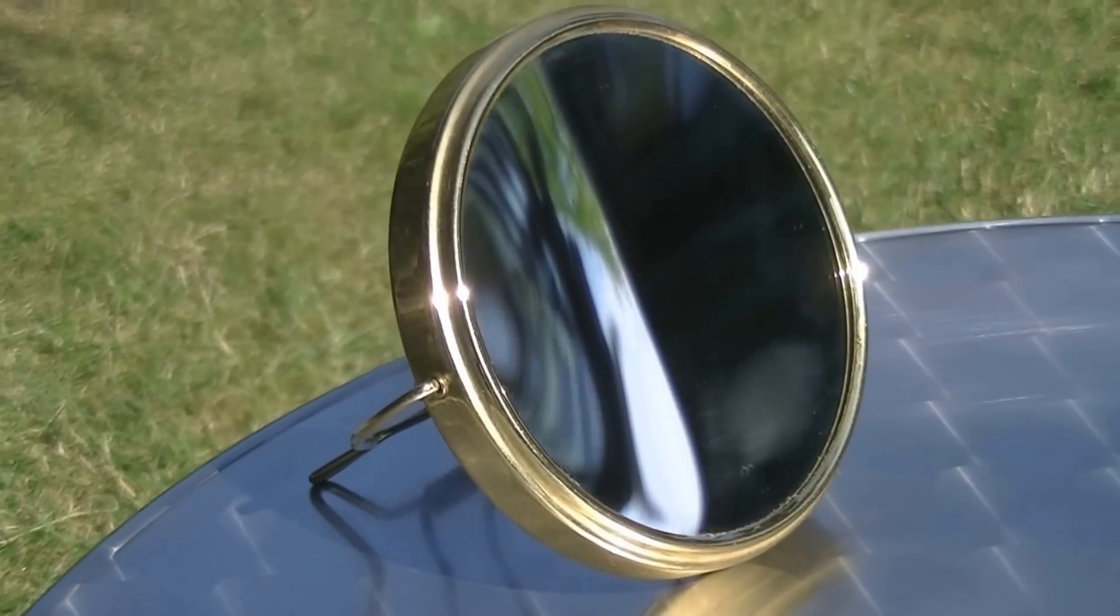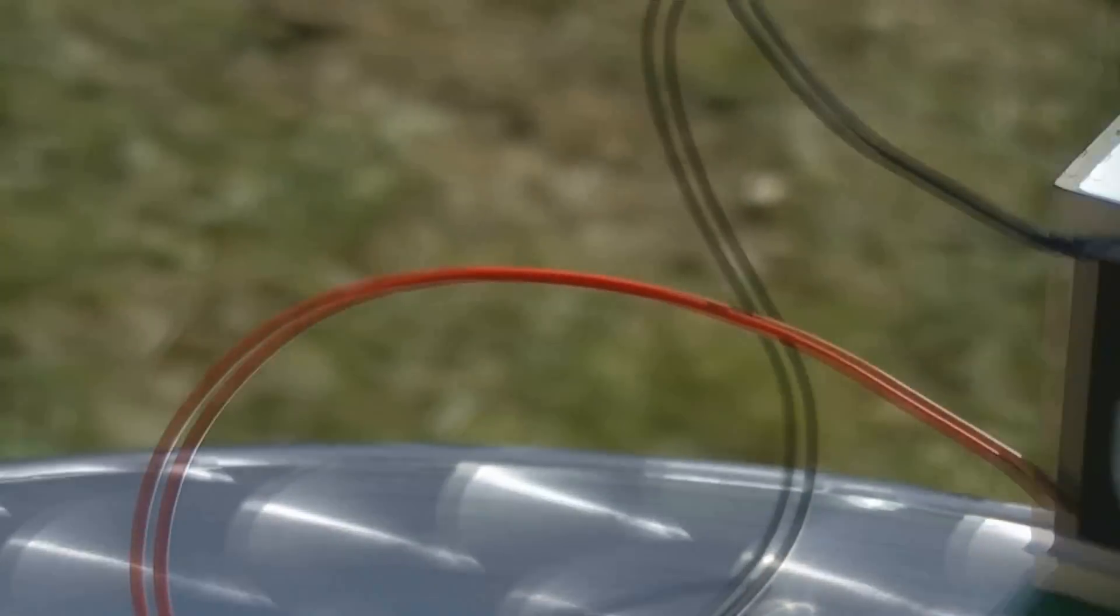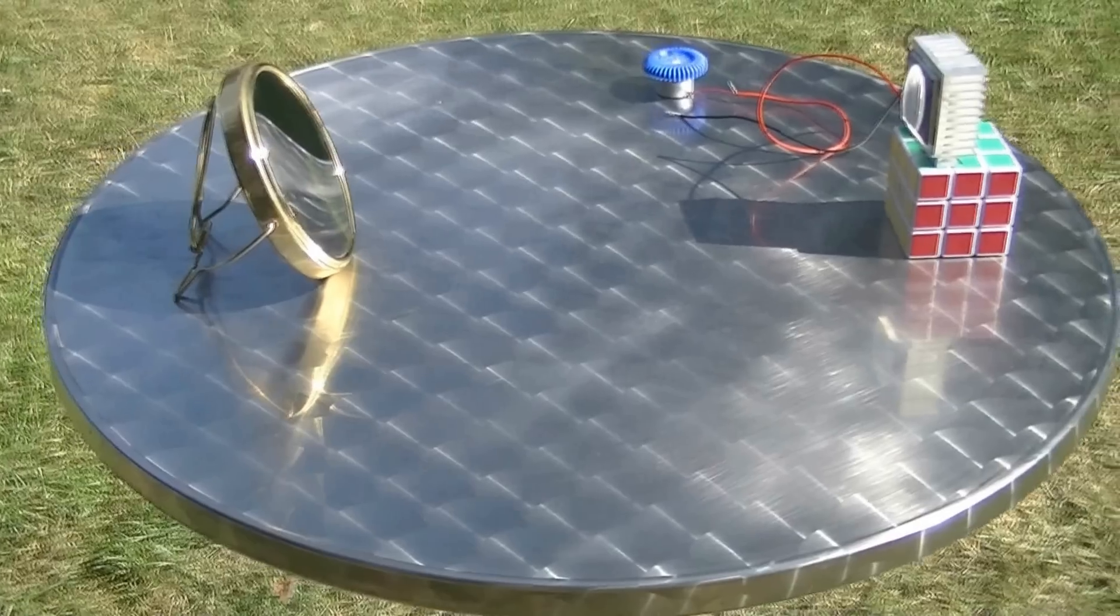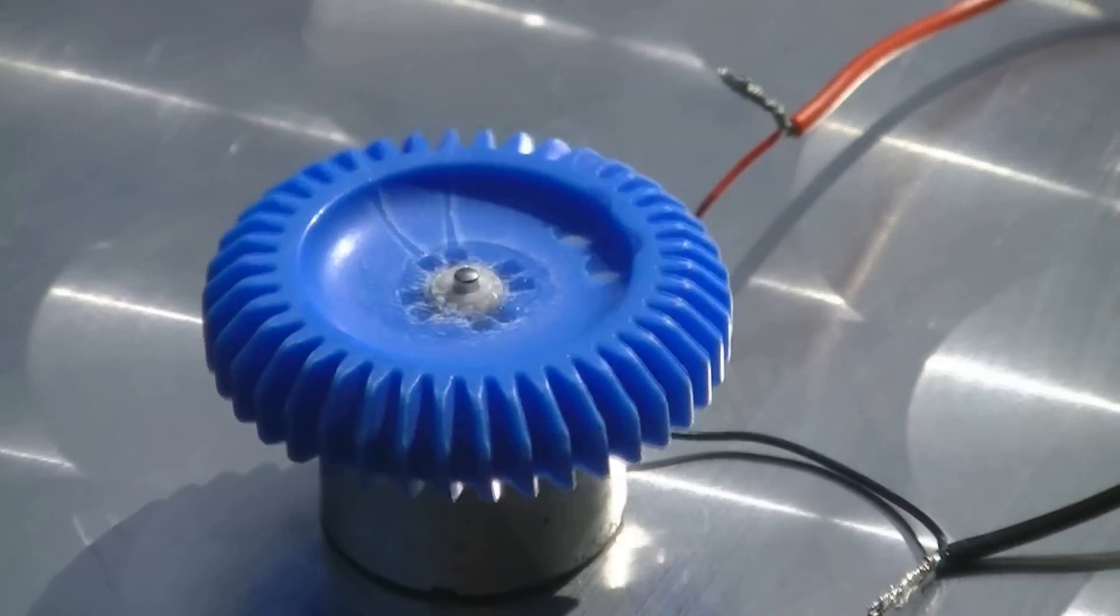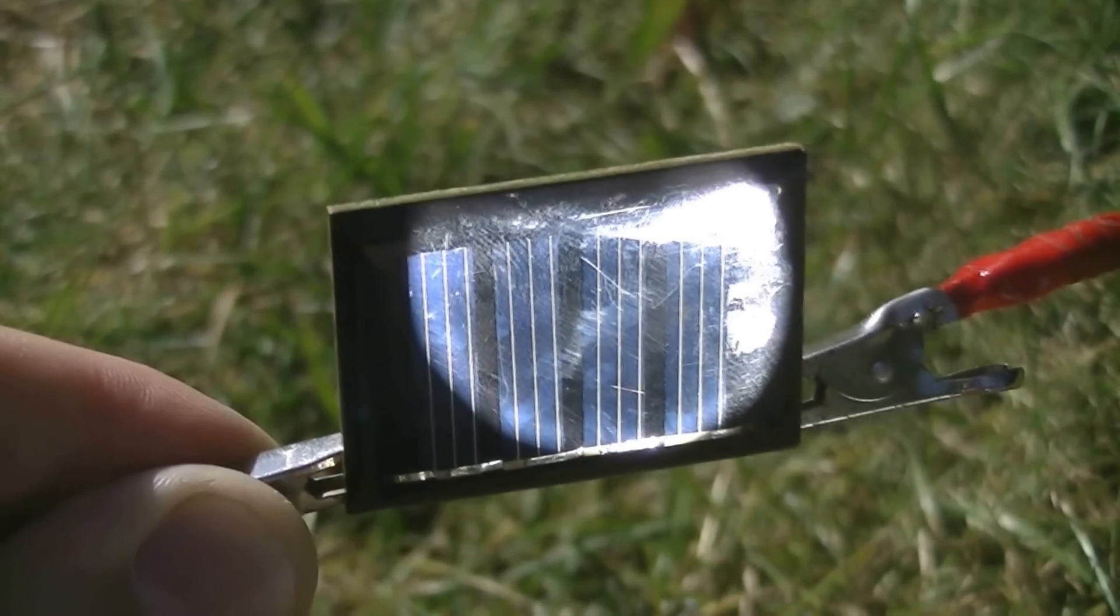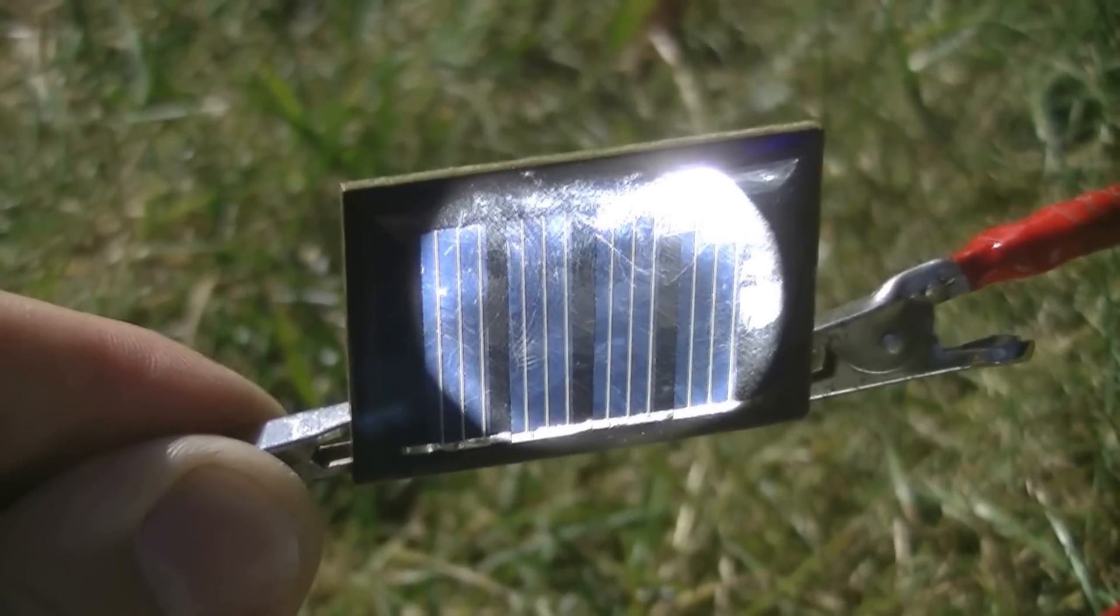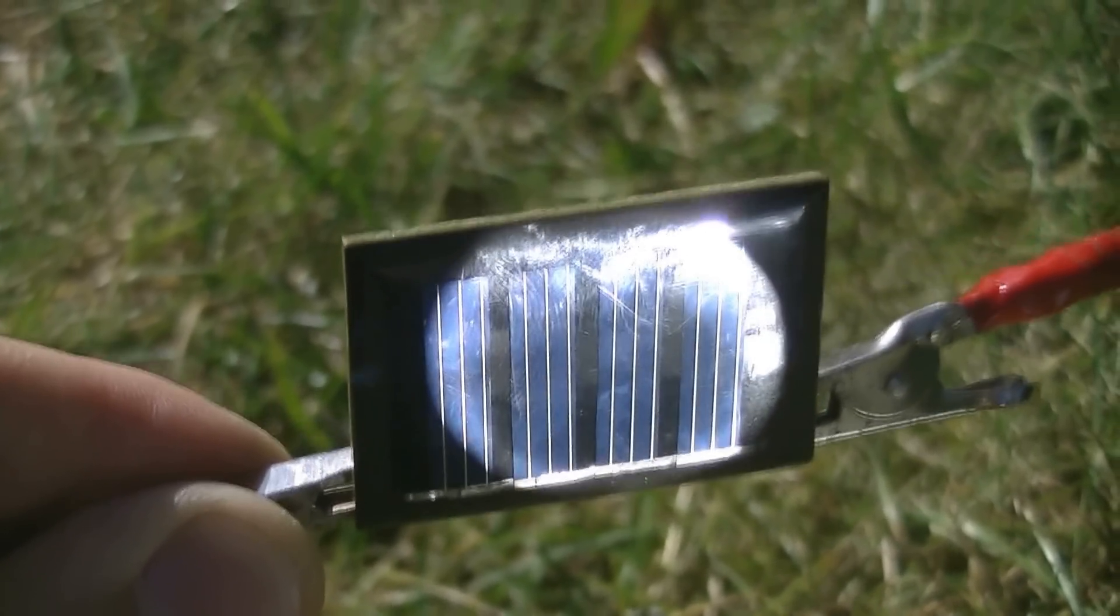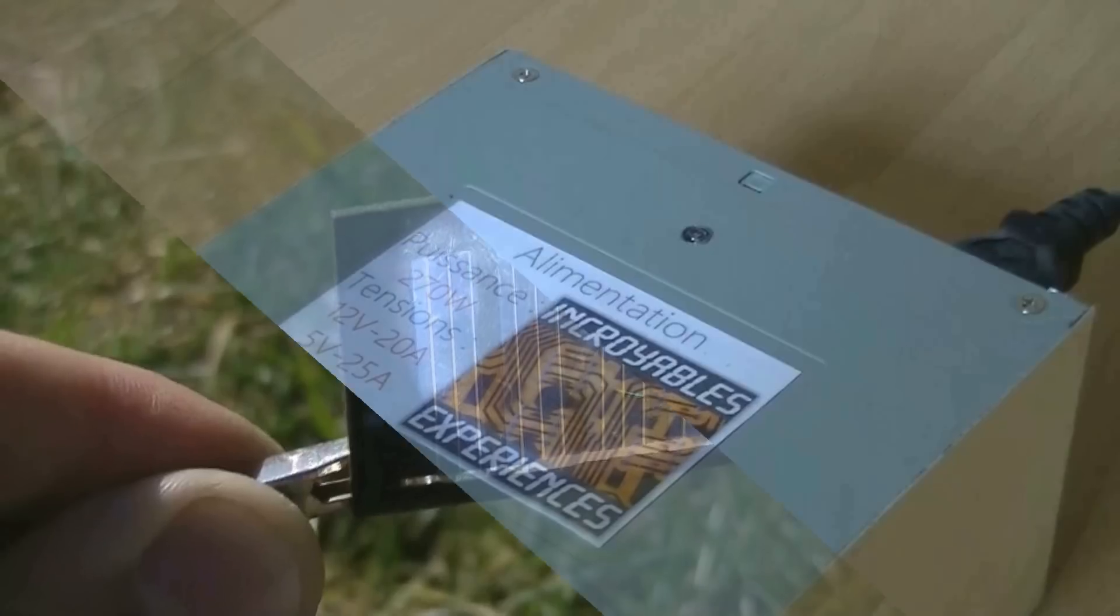In order to concentrate the rays of the sun on the module, we use a parabolic mirror. We can see that we produce enough power to supply an electric motor. It works, but solar cells are far from being a poor second to Peltier modules. Indeed, in our conditions, a solar panel of the same size produces 18 times more than a Peltier module.